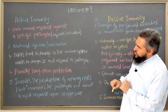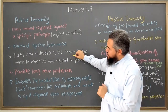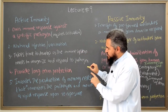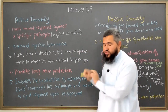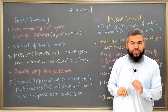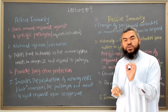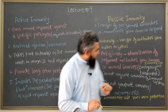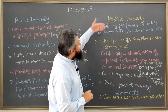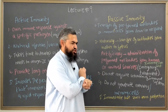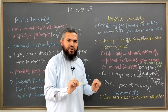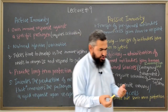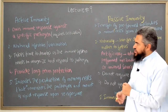A major difference between active and passive immunity is time. Active immunity takes time to develop because the immune system first has to recognize the pathogen and then respond to it — so active immunity is a time-consuming process compared to passive immunity. In passive immunity, since you are getting preformed antibodies, your immune system is not making any antibodies or T cells, so it is not time-dependent.